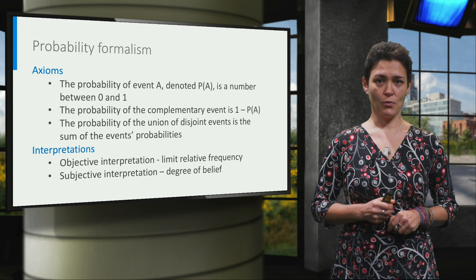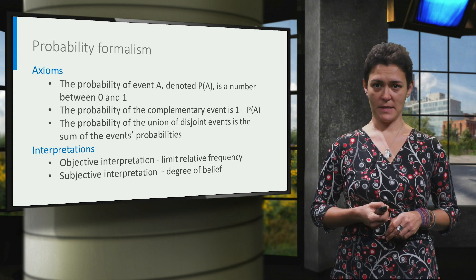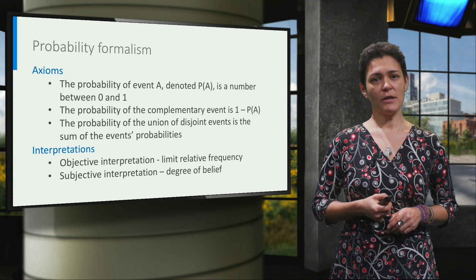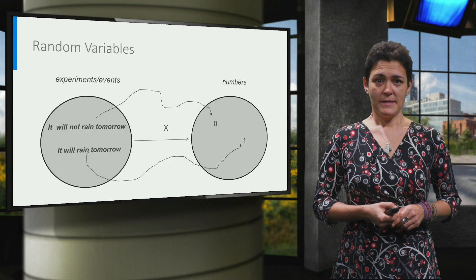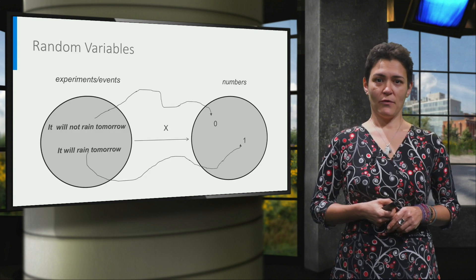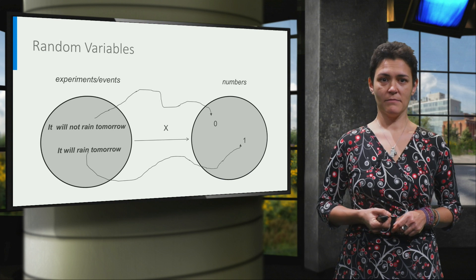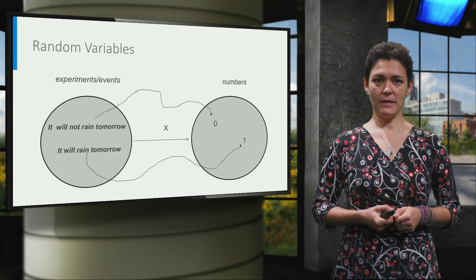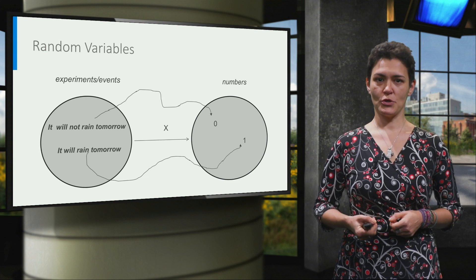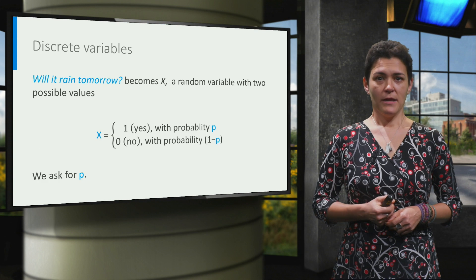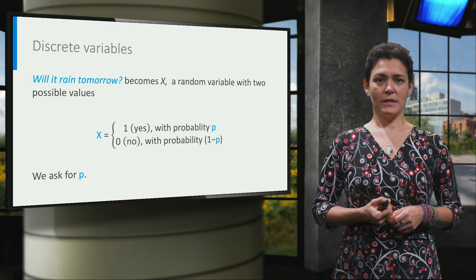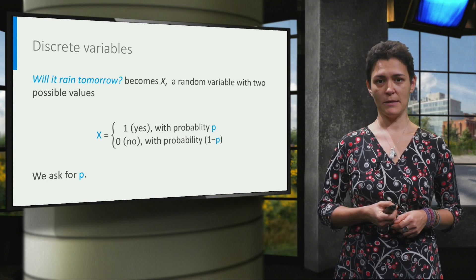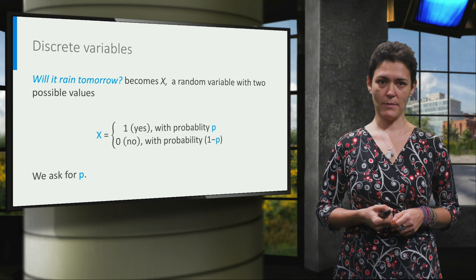Before diving into what it is that we are asking the experts about, let us remember that from events and experiments we can construct random variables, which are simply links between the set of events and the set of numbers. An event A, it will rain tomorrow, can be associated with value 1, and its complement, it will not rain tomorrow, can be associated with 0. In this way, we construct what is called a discrete, binary random variable, which can take value 1 with probability p and value 0 with probability 1−p.